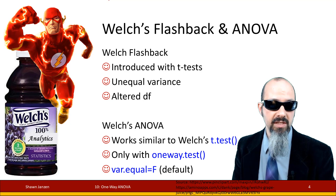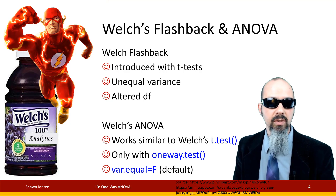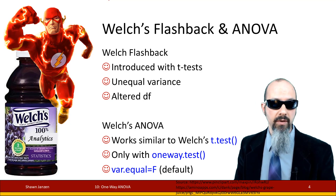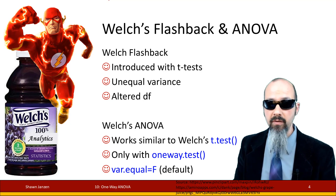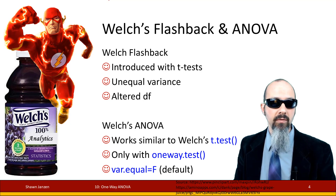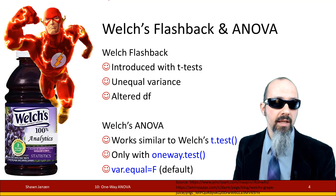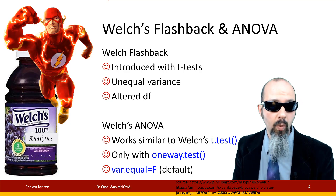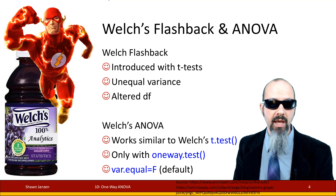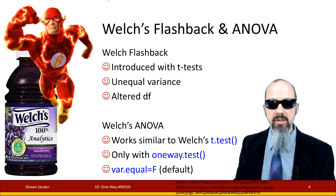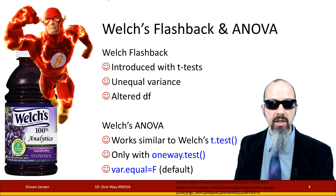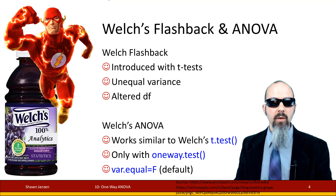The same applies for Welch's ANOVA: the oneway.test function gives you Welch's ANOVA by default, and when you run it with the option var.equal = TRUE, you turn off Welch and get the classic one-way ANOVA — the same as you would get with the AOV function. Keep those in your back pocket for what you're going to need.